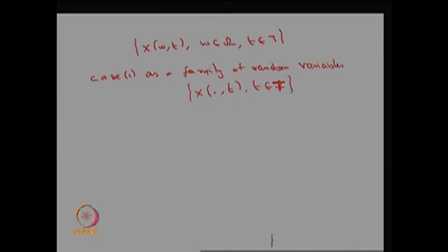This is the way I can create the random variable and this is the easier approach. For a fixed t, it is going to be one random variable, and I have collected a family of random variables for different values of small t. Therefore, this is the way we can create the stochastic process, and this is the easier approach.